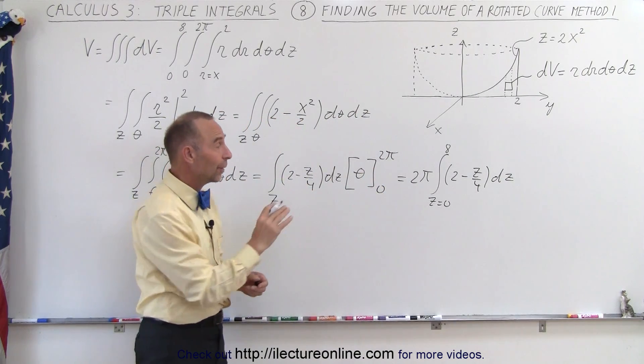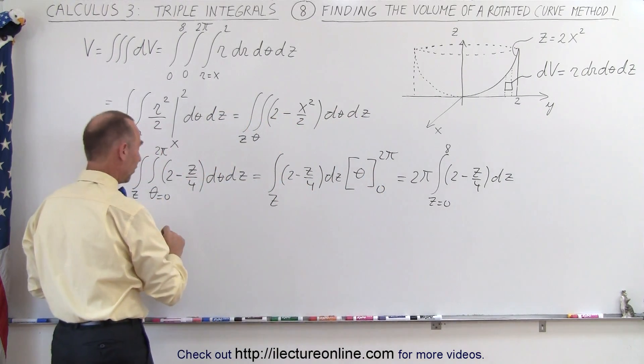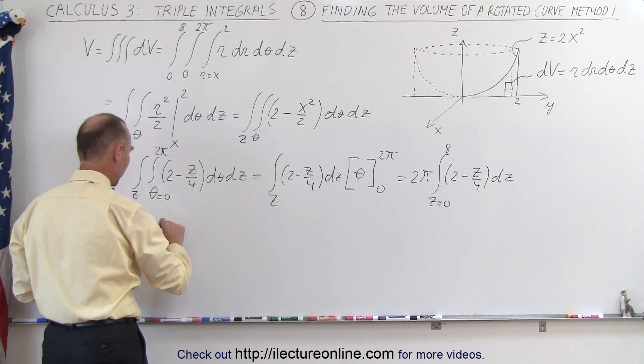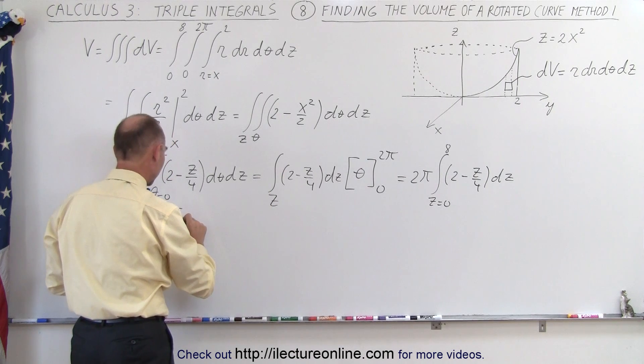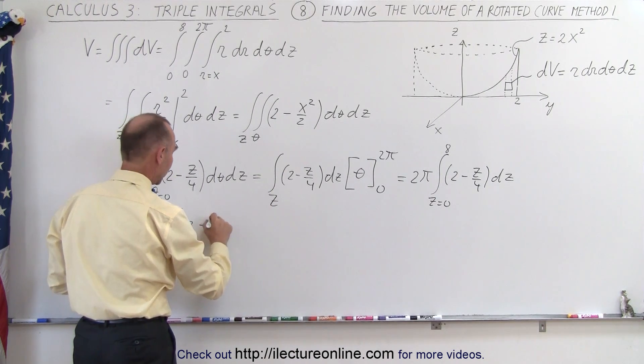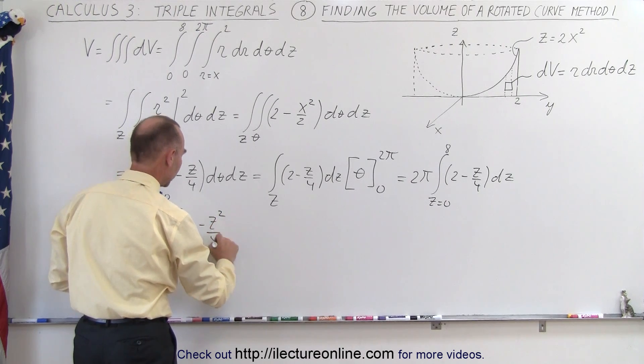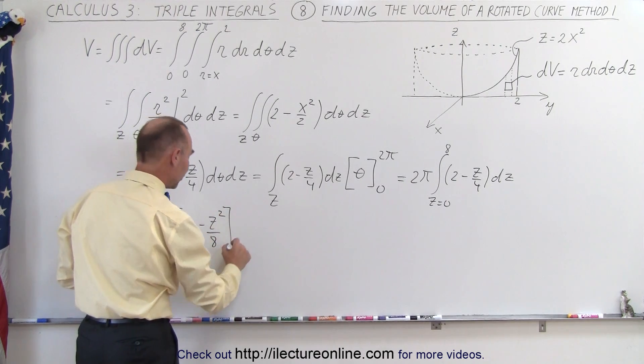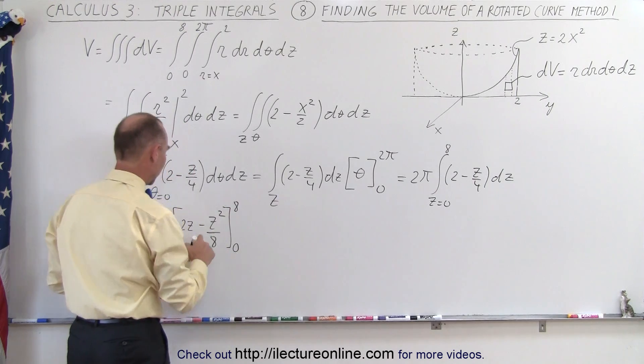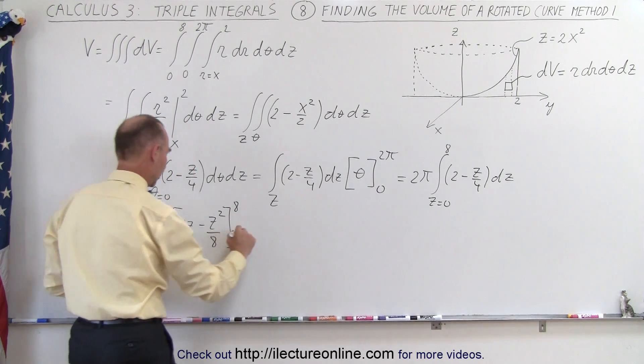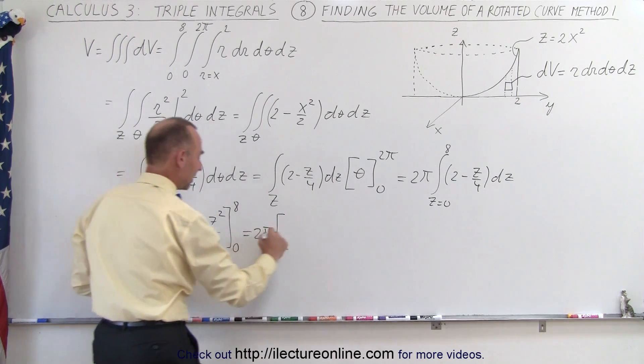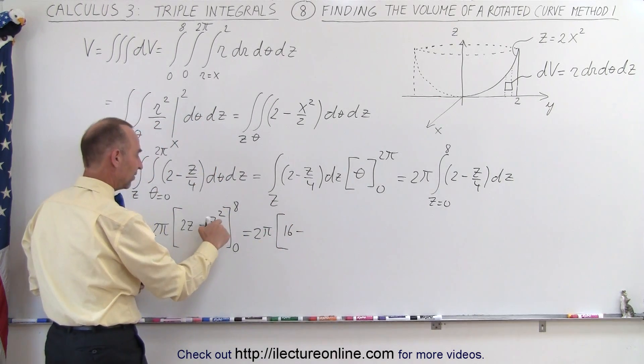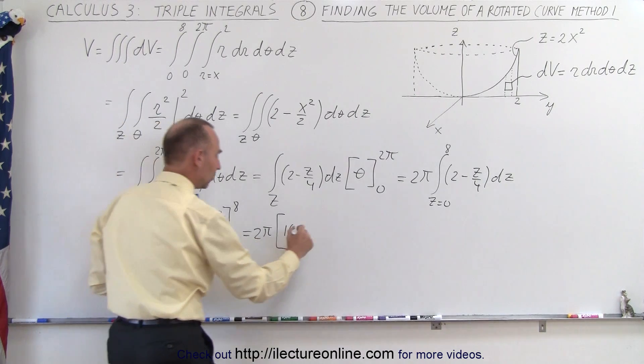Okay, now we can go ahead and integrate that last portion, so we get the following. This is equal to 2π times—so we have 2 integrated times dz that becomes 2z minus z squared over 8, and that's going to be evaluated from 0 to 8. So when we plug in the upper limit we get 2π times we get 16 minus that would be 64 divided by 8 which is 8.